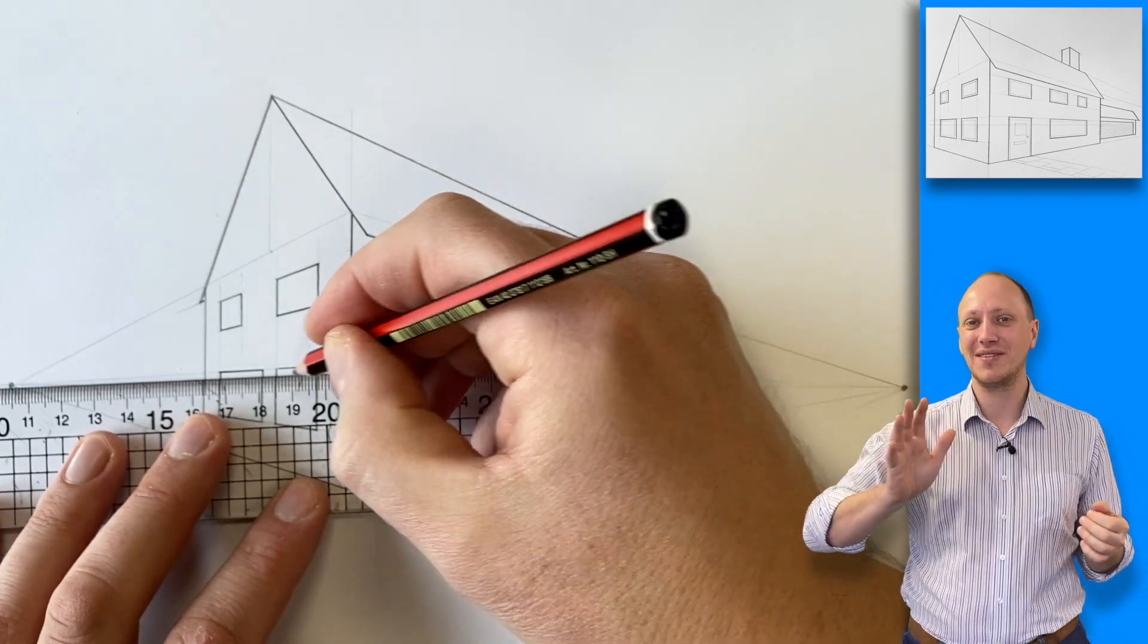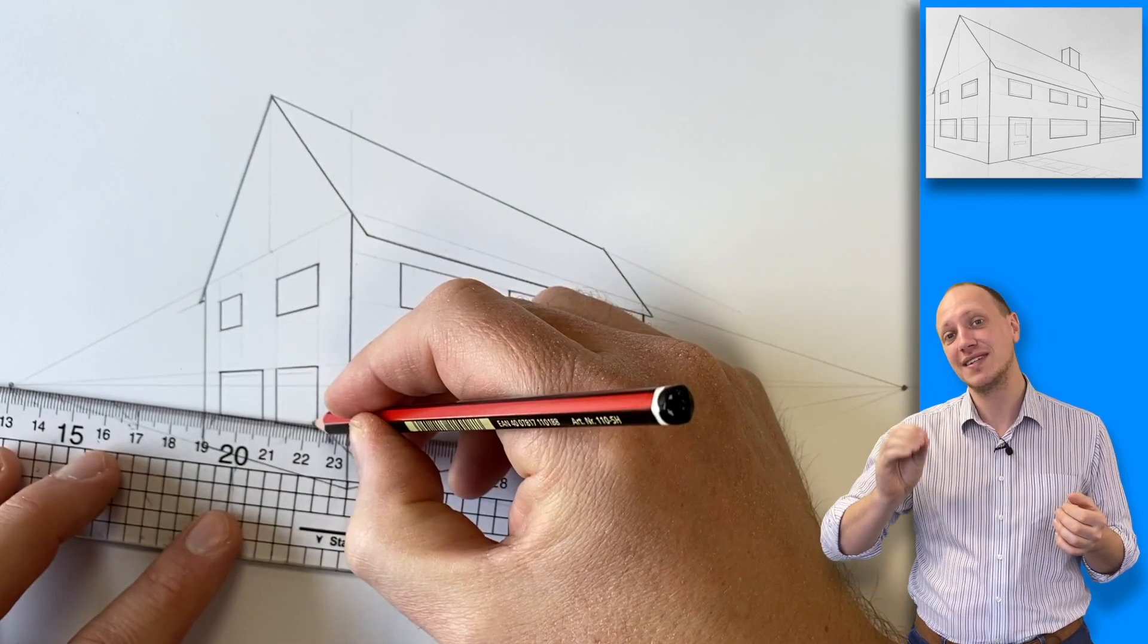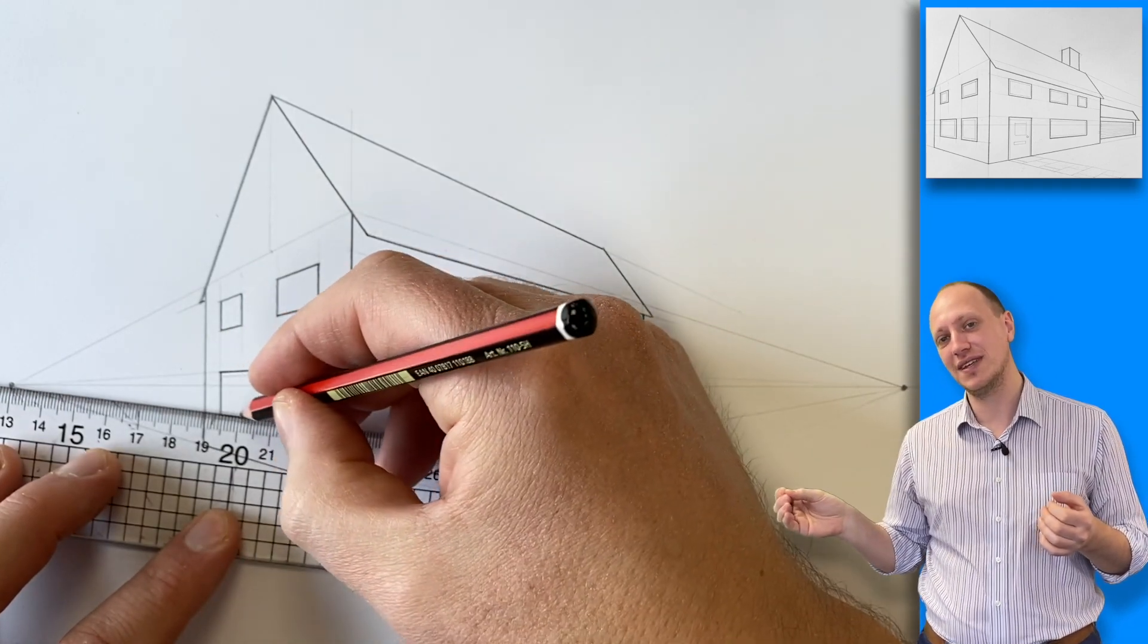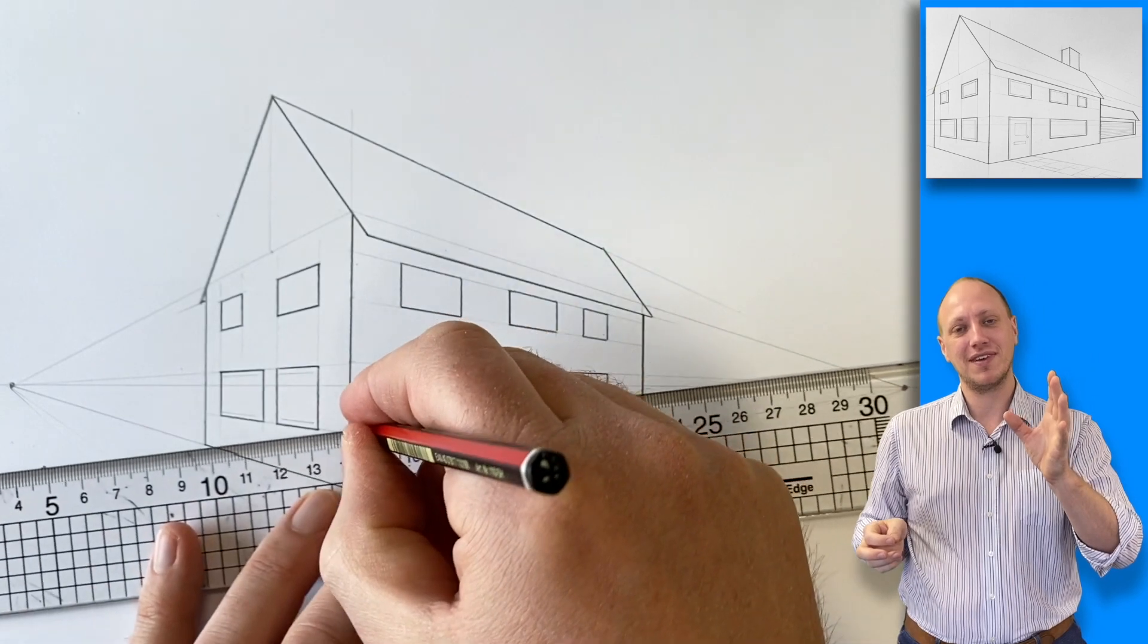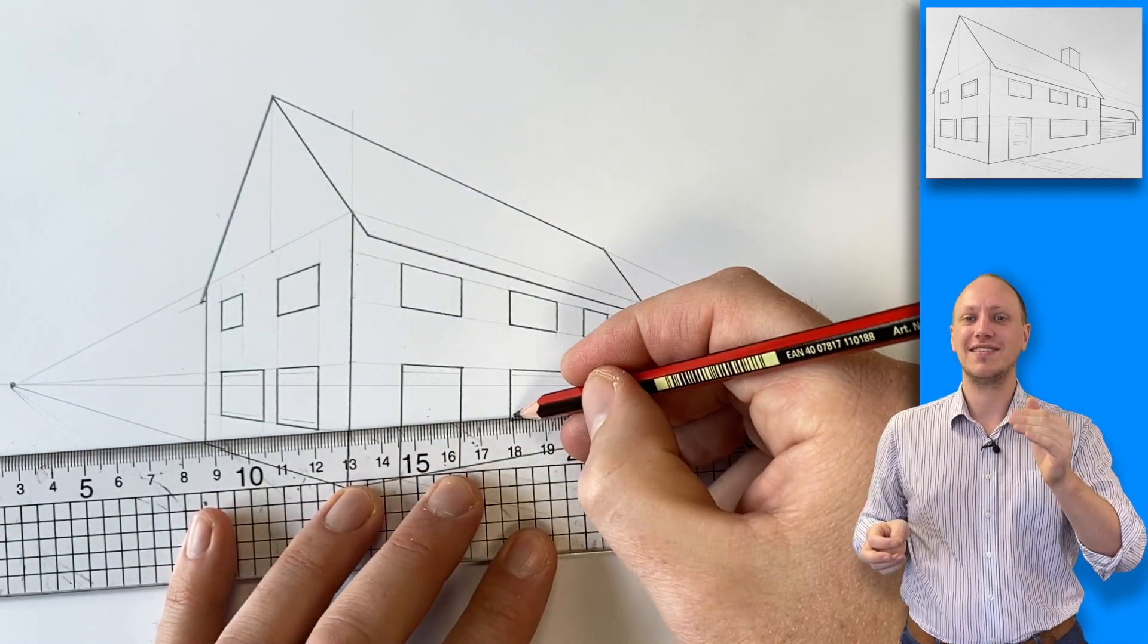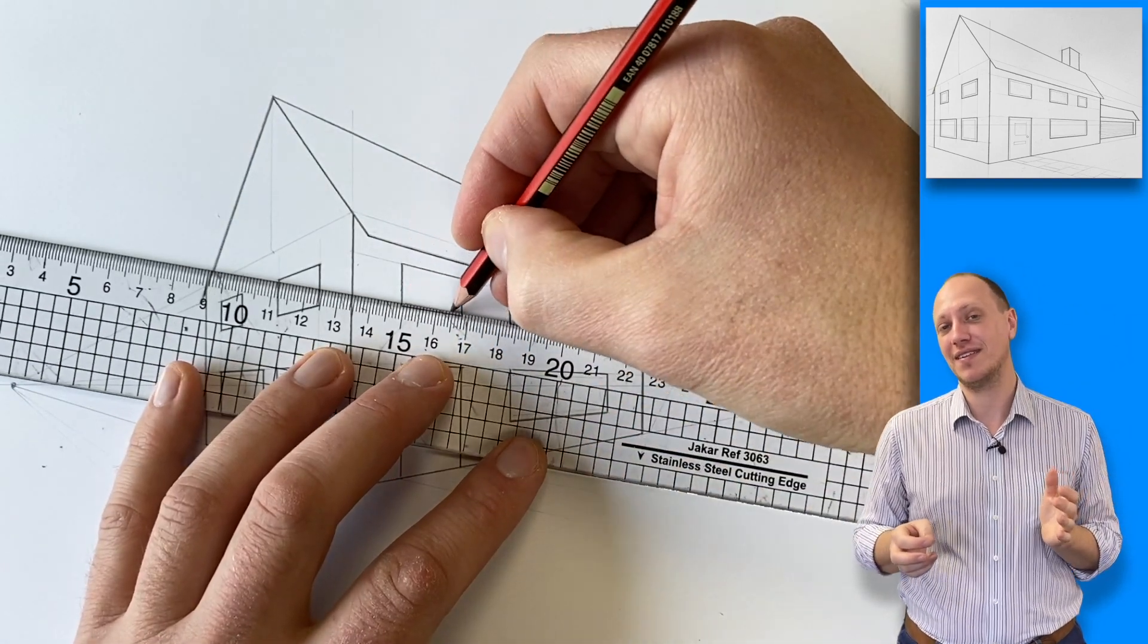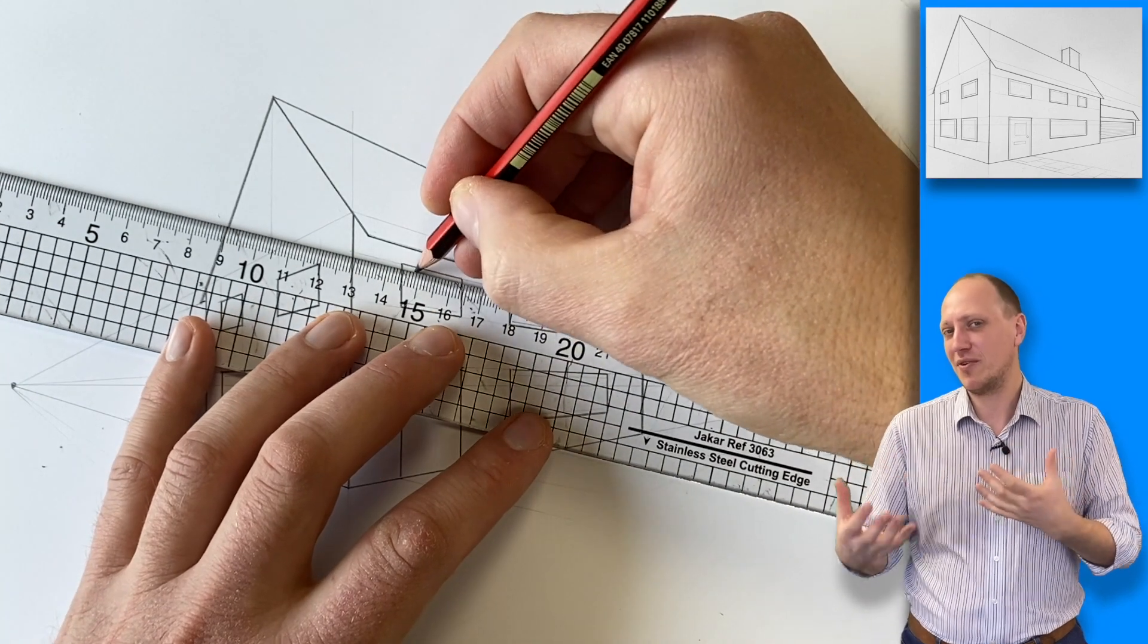If your windows are on the right side of your house, take the lines to the right side vanishing point. And if your windows are on the left side of your house, take those lines to the vanishing point on the left hand side. So that you keep everything in the right direction looking great.